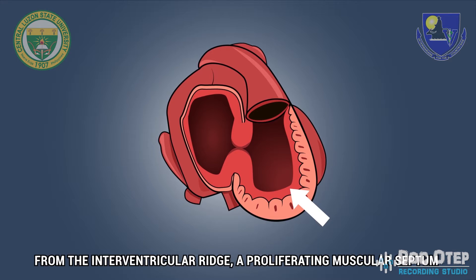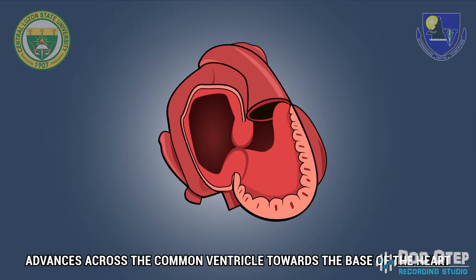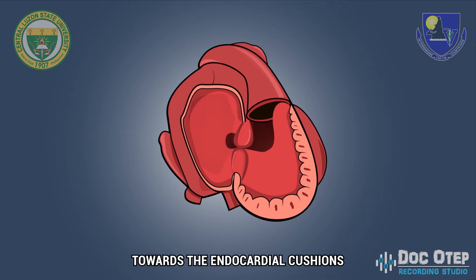From the interventricular ridge, a proliferating muscular septum advances across the common ventricle towards the base of the heart. Simultaneously, the interatrial septum rapidly grows towards the endocardial cushions, constricting the foramen primum.